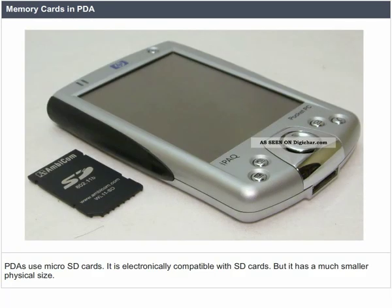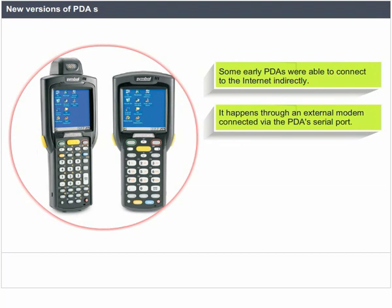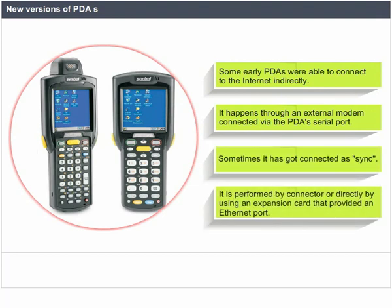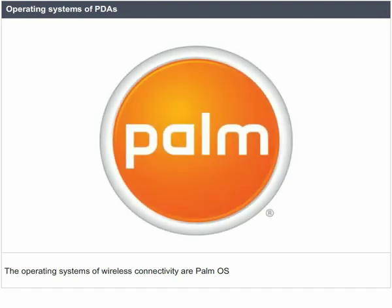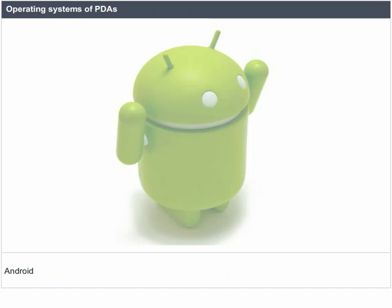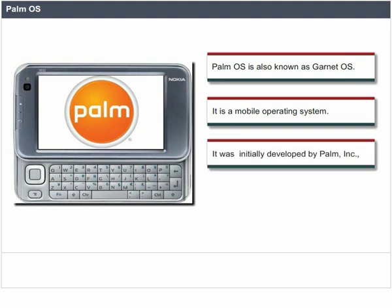PDAs use micro SD cards, which are electronically compatible with SD cards but have a much smaller physical size. Some early PDAs connected to the internet indirectly through an external modem connected via the PDA's serial port or sync connector, or directly using an expansion card providing an Ethernet connection. Many modern PDAs have Wi-Fi wireless network connectivity and can connect to Wi-Fi hotspots. Palm OS, also known as Garnet OS, is a mobile operating system initially developed by Palm Inc. for personal digital assistants in 1996, designed for ease of use with a touch screen-based graphical user interface.